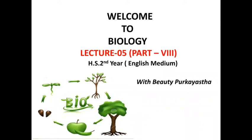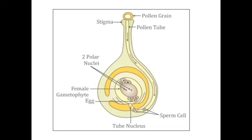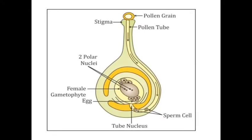Welcome to Biology, Lecture 5 Part 8. We are learning about sexual reproduction in flowering plants. We came to know about how pollen-pistil interaction happens in the female part of a flowering plant. Here is a diagram showing pollen-pistil interaction. As a result of this, we have learned how the pollen tube releases two male gametes or sperm cells into the ovule.